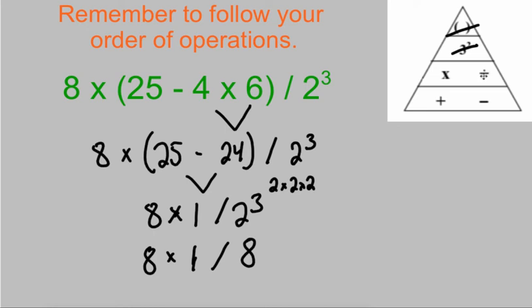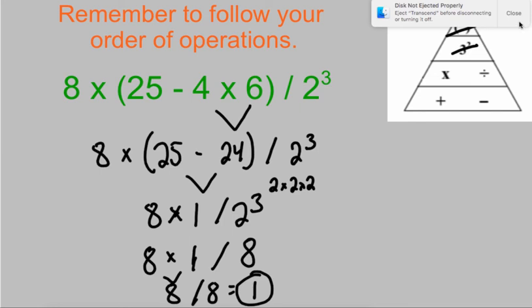Again, multiply and divide from left to right. So multiplication happened to come first this time. 8 times 1 is 8. And then remember that slash is just another way of showing division. 8 divided by 8 gives me an answer of 1. And that's my final answer.